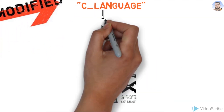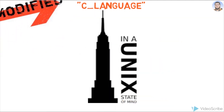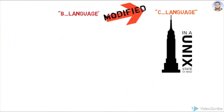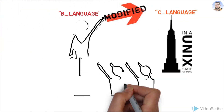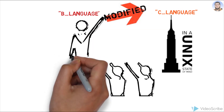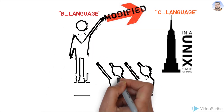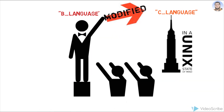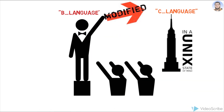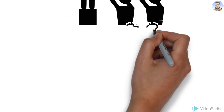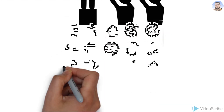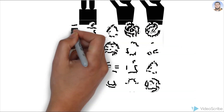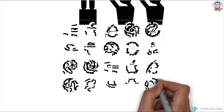C was created solely as a component to design the UNIX operating system. But after its creation, C became so popular that operating systems and many programming languages were designed using C programming. This is the whole reason behind the design of C programming language.